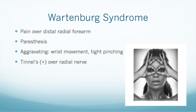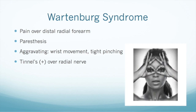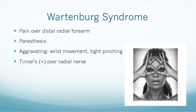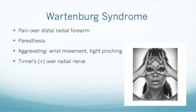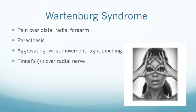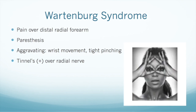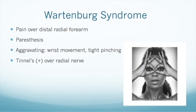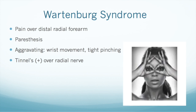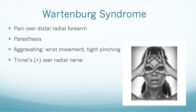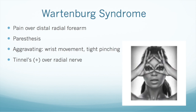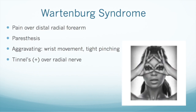The last condition we will discuss is Wartenberg syndrome, which is a compression of the superficial sensory radial nerve. This can cause paresthesia over the dorsal radial hand. It will be painful for these patients to perform a pinching of the thumb and index finger in an OK sign. A high percentage of these patients will present similarly to de Quervain's tenosynovitis, but their Finkelstein's test may or may not be positive.